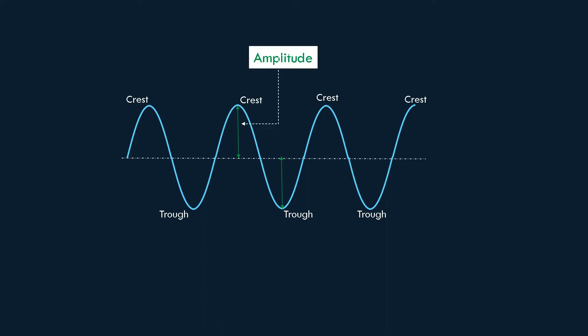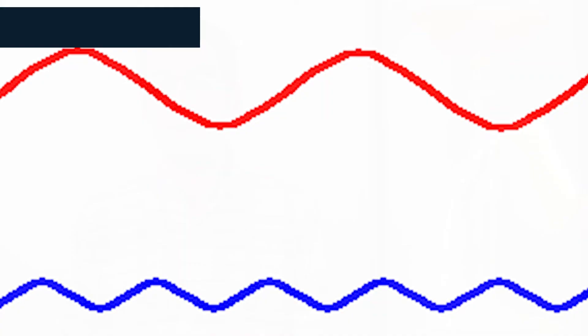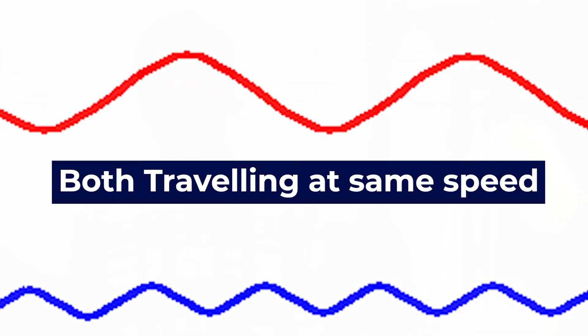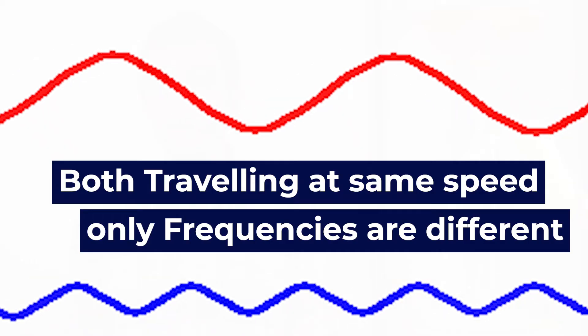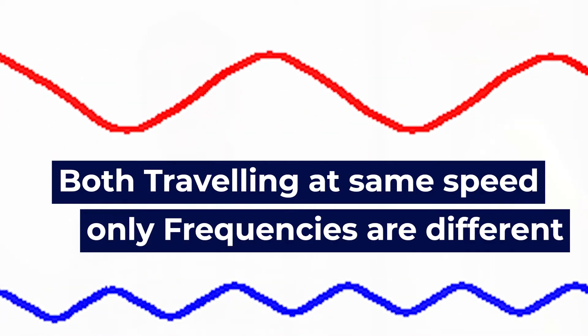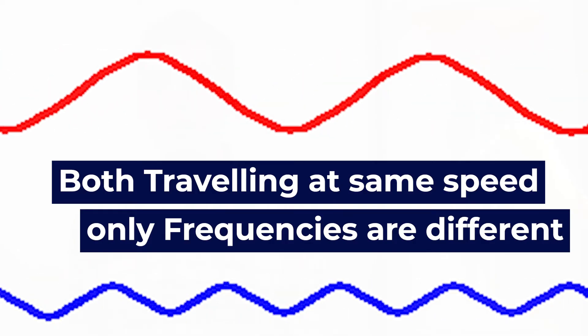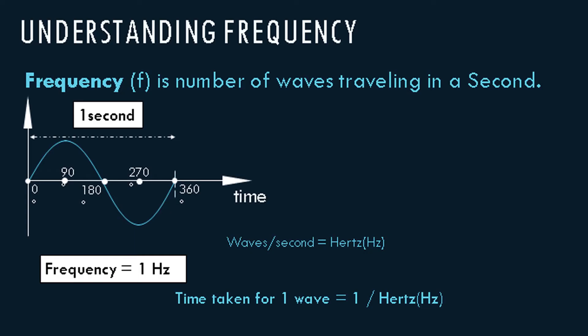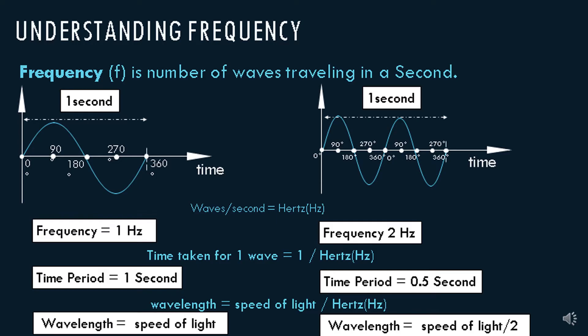Red light, blue light and green light — in fact all light — travel at the same speed, which is 300 million meters per second. But fewer red light waves travel in a second, whereas there are more blue light waves traveling in a second. If you count the number of waves traveling in a second, that is equal to the frequency. If one wave is traveling in one second, then the frequency is equal to one hertz. And if two waves are traveling in a second, then the frequency is equal to two hertz.